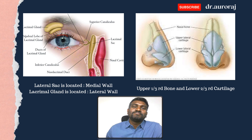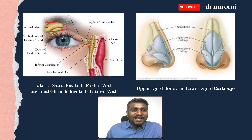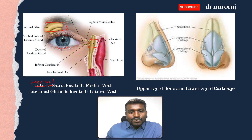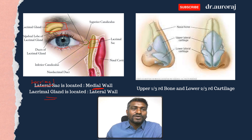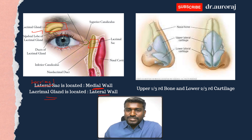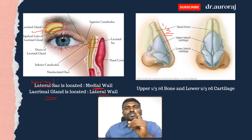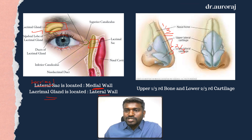Focus on the lacrimal sac and the lacrimal gland: the lacrimal sac is located toward the medial wall, and the lacrimal gland is located toward the lateral wall. For the nose, the upper one-third is composed of bone, and the lower two-thirds is composed of cartilage — very important to revise for the main exam.